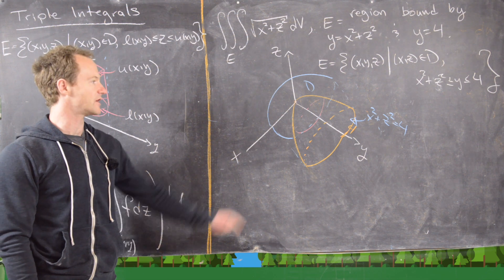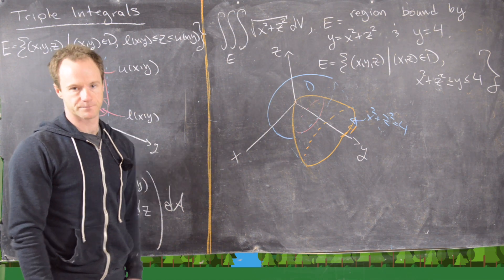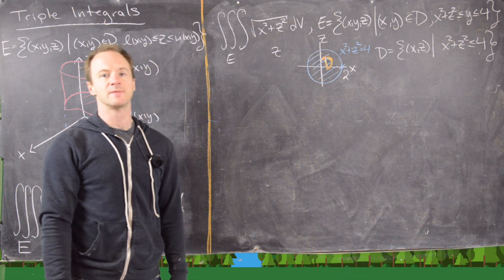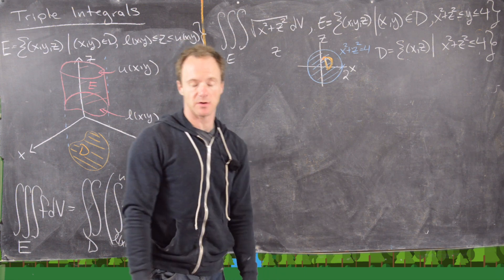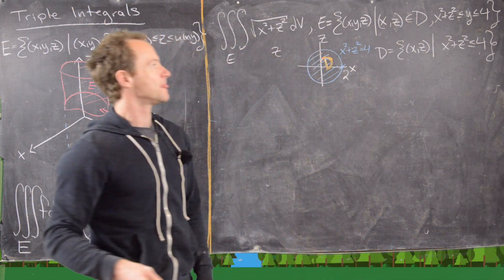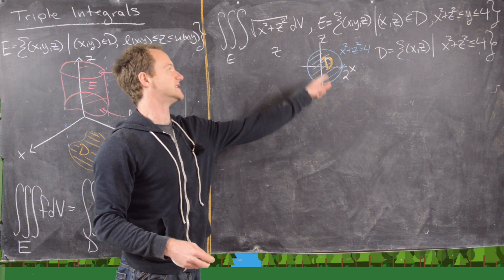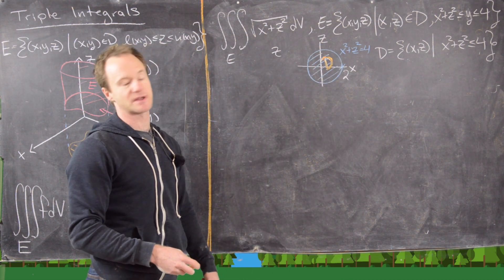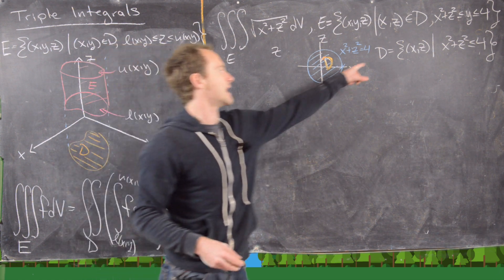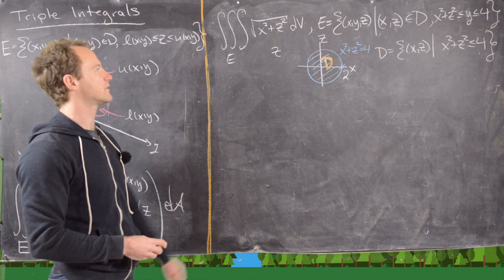To summarize: E consists of (x, y, z) where X and Z come from region D in the XZ plane, and Y is bounded between x² + z² and 4. Region D in the XZ plane is the disk x² + z² ≤ 4 — that's where the paraboloid intersected with the plane y = 4, which is the widest point of the paraboloid.